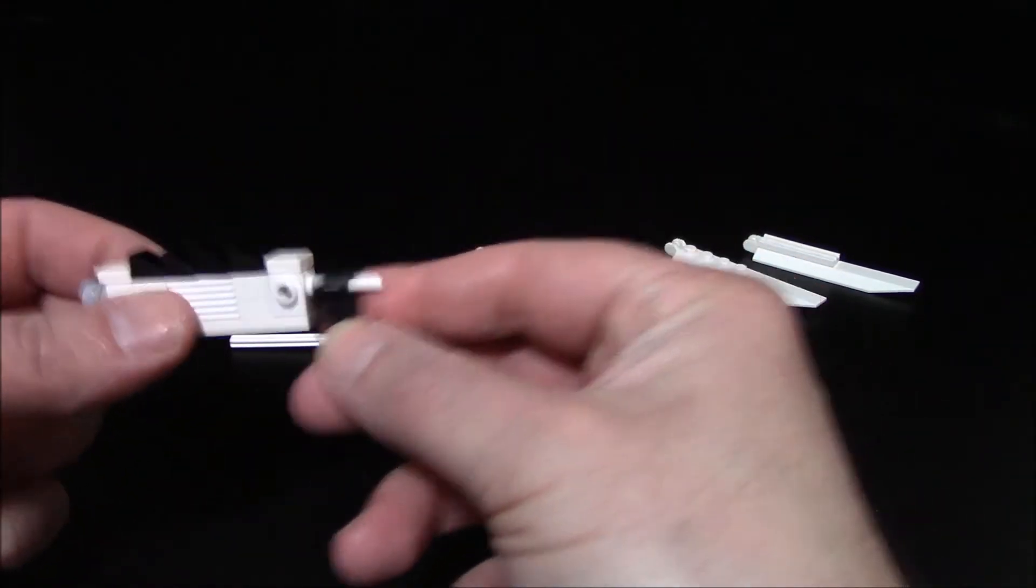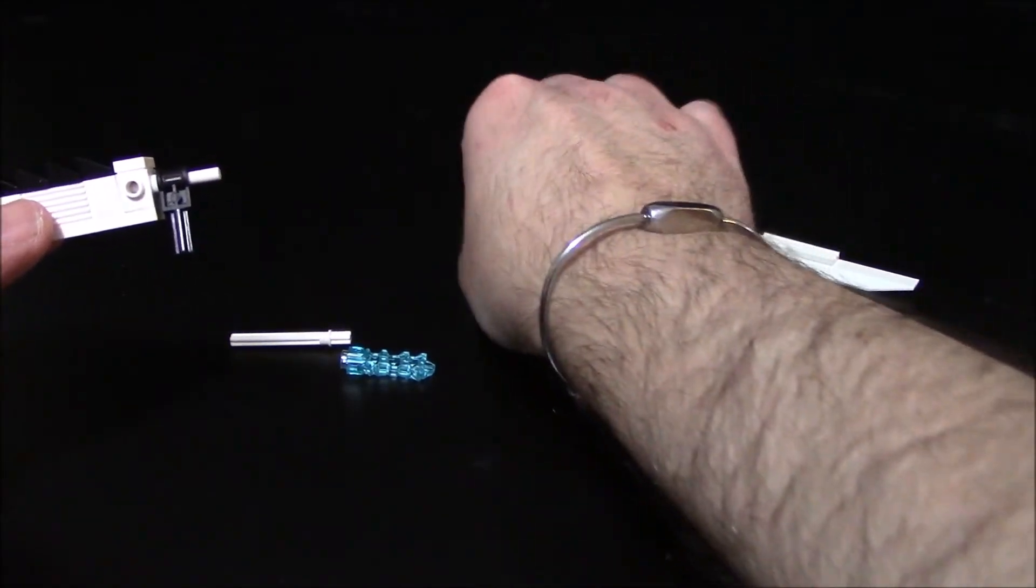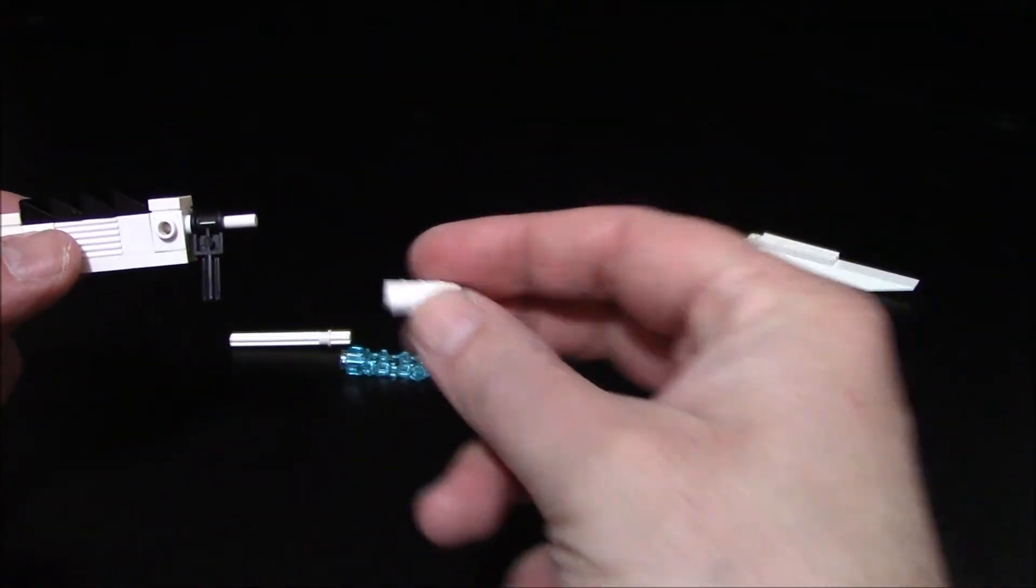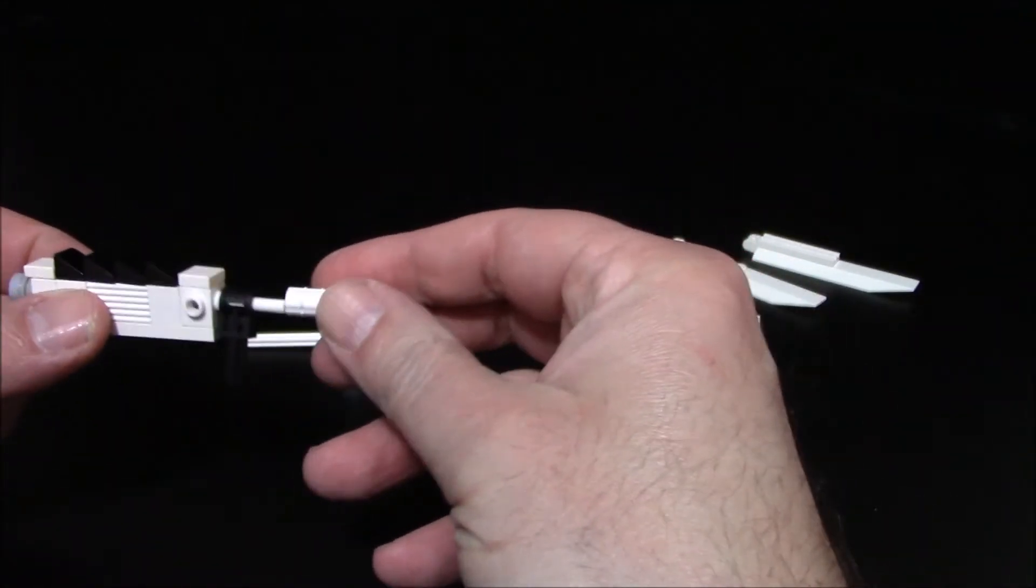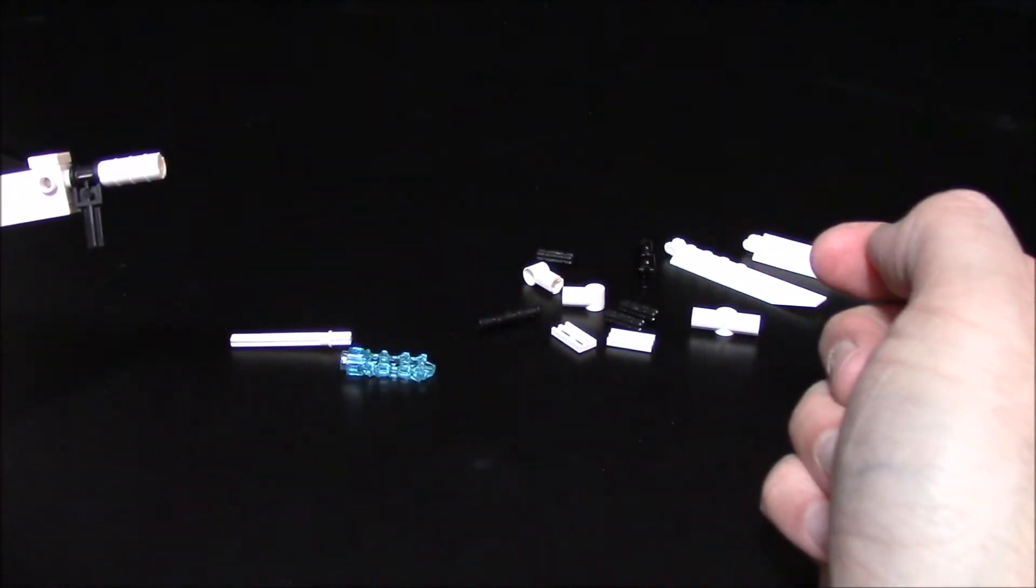Then we're going to need this technic bushing. Slide it on like this, then this white technic bushing that has the cross axle on both sides. Place it in just like this.